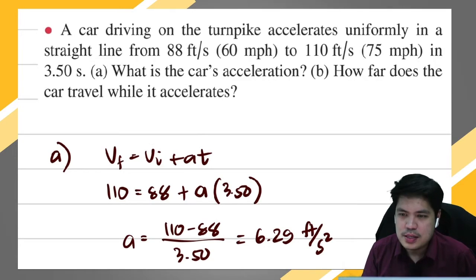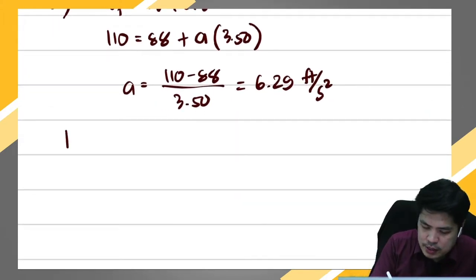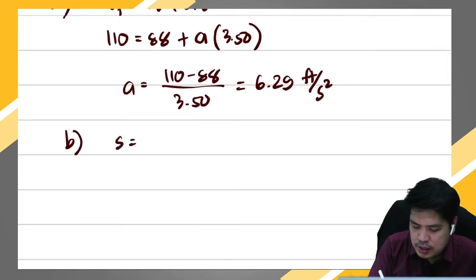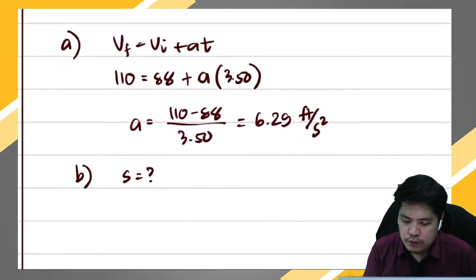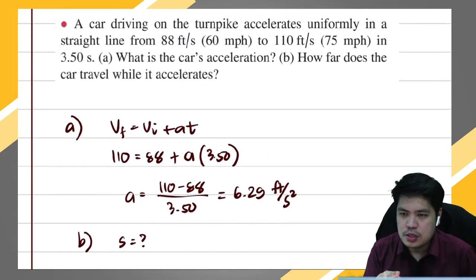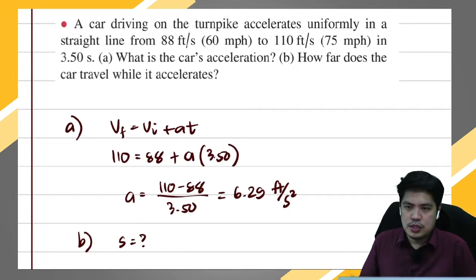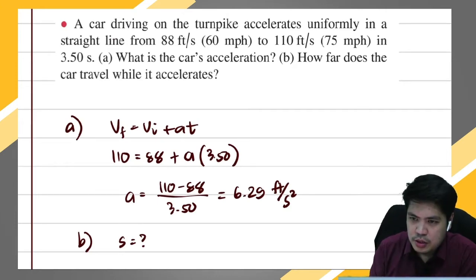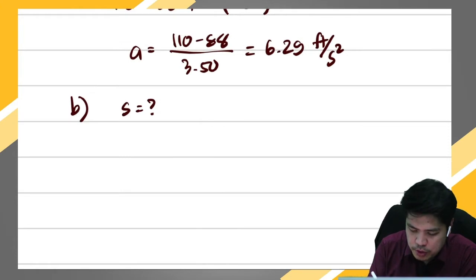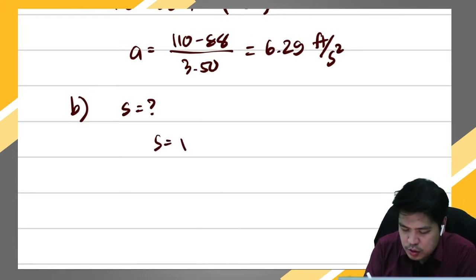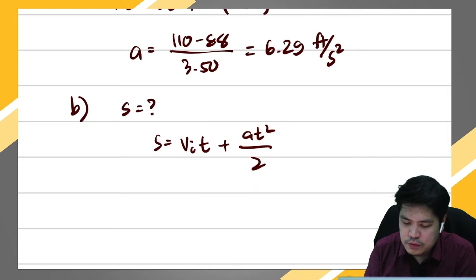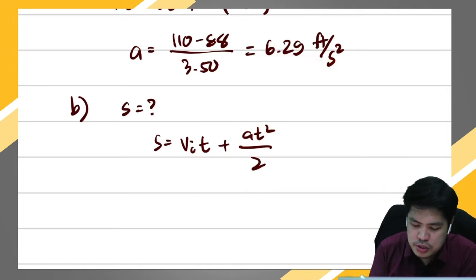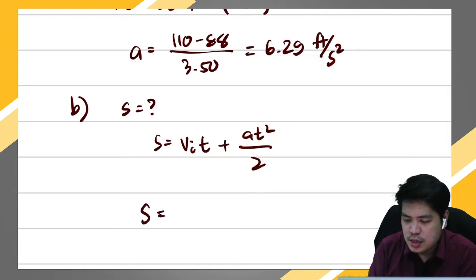For letter b, how far does the car travel while it accelerates? We are asked to get the distance covered or displacement while it accelerates. The formula to use involves initial velocity, final velocity, and time — either the second or third formula. Using the second formula: s = vi·t + (a·t²)/2, we do have the acceleration available.